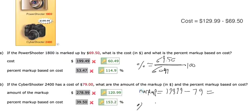And then they want a percent markup based on cost. So the markup is $120.99. The cost, they tell us, is $79. And then we always multiply by 100 in the calculated percent.